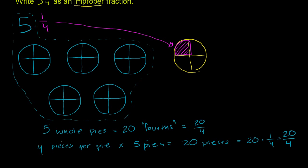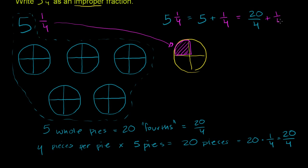If we write 5 and 1/4, we just saw that the 5 is 20 fourths. So we can rewrite this: 5 and 1/4 is the same thing as 5 plus 1/4, which is the same thing as 20 fourths plus 1/4. To see that 5 equals 20 fourths, you literally just divide 4 into 20 — you get 5 with nothing left over. So if I have 20 fourths and I add 1 more fourth to it, how many fourths do I have? I have 21 fourths.